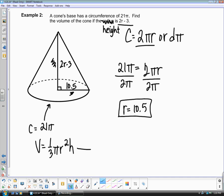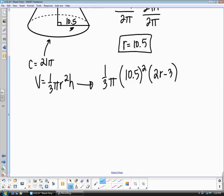So let's go ahead and plug everything into our formula. We have one third pi. Your radius was 10 and a half. So we can square that. And then our height was 2r minus 3. Now, we just found the radius. The radius was 10 and a half. So we can actually plug that 10 and a half in here. We're going to have one third pi, 10 and a half squared. And then we're going to have 21 minus 3, which is just 18.